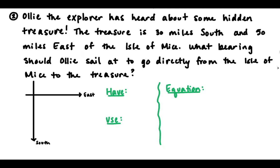So again, we want to set up our map. So our directions were south and east, so again, I have the south and east section of the compass there. And we know the treasure is 30 miles south and 50 miles east of the Isle of Mice. So we're comparing to the Isle of Mice. So I'm going to put the Isle of Mice in the middle. That's Isle of Mice.